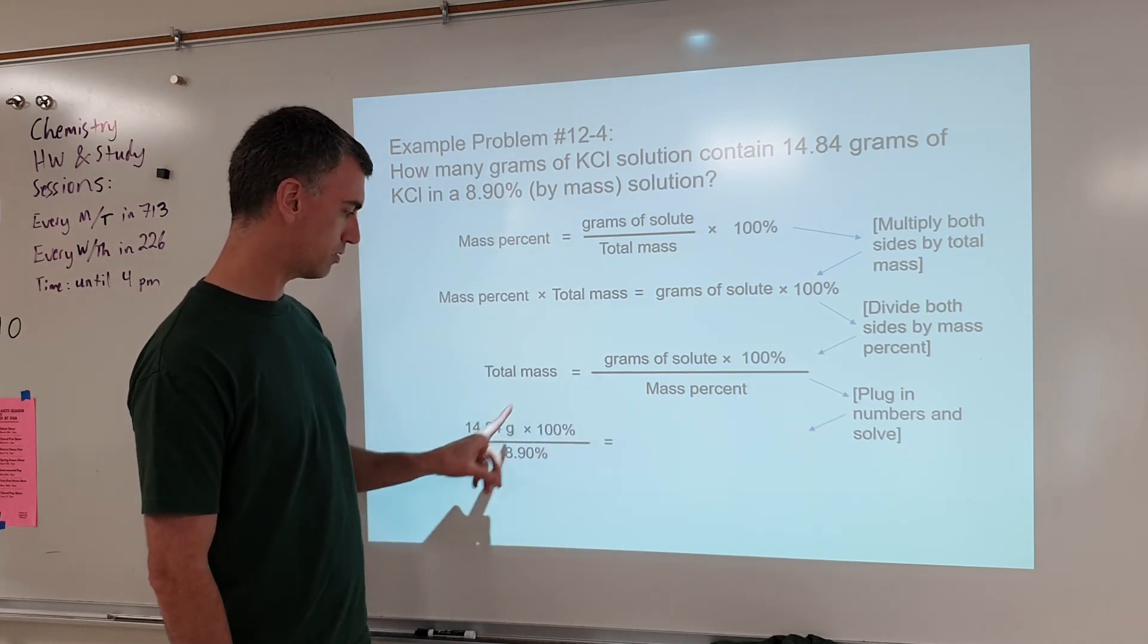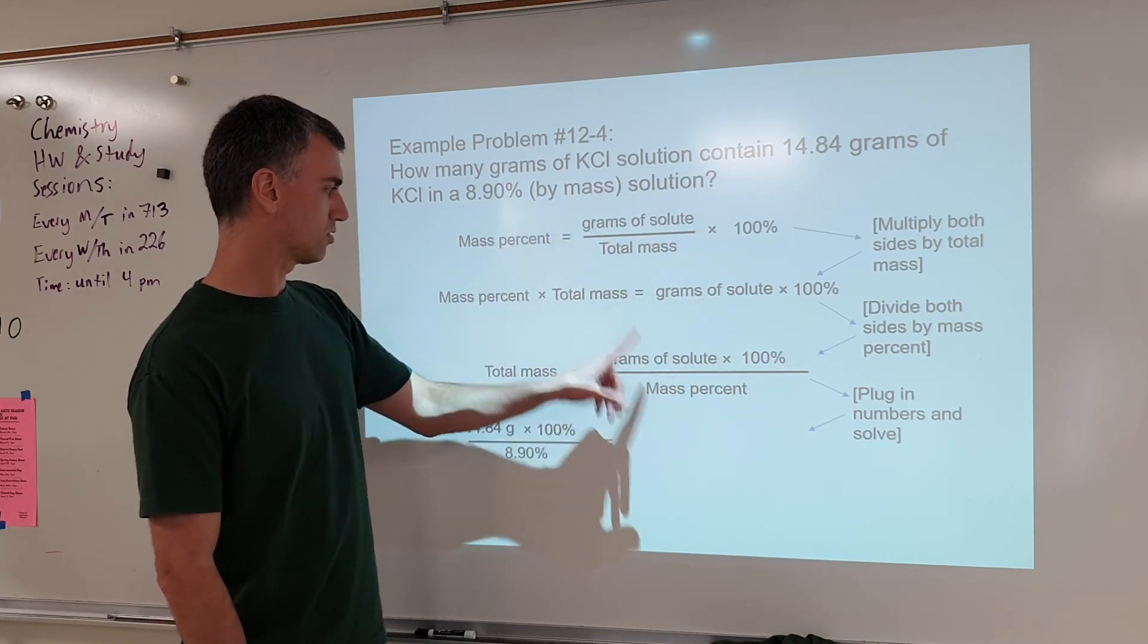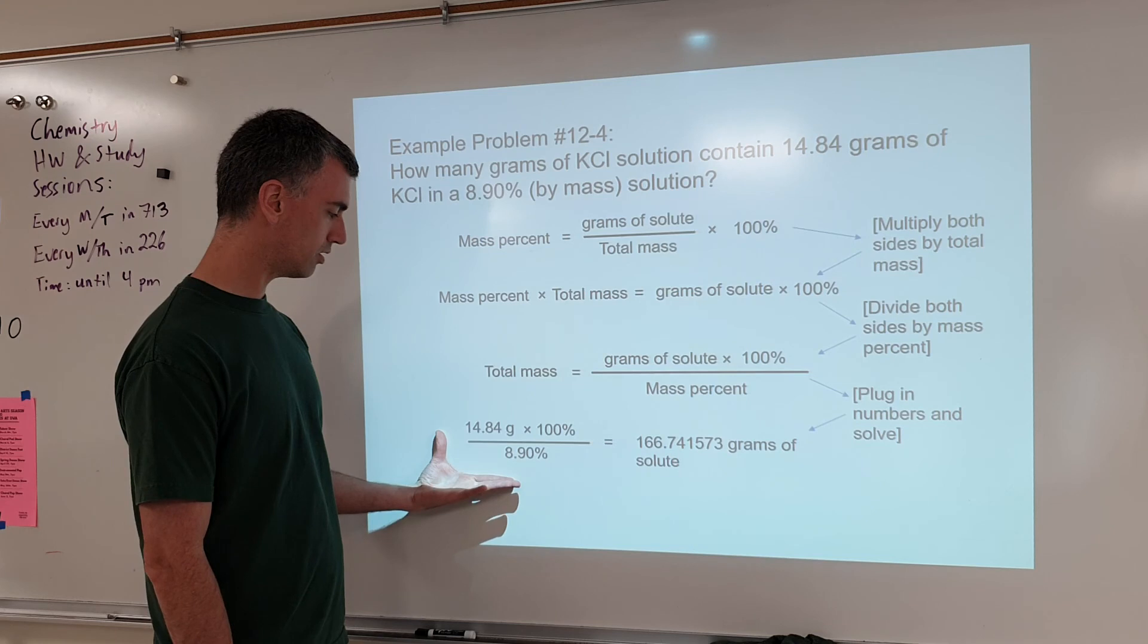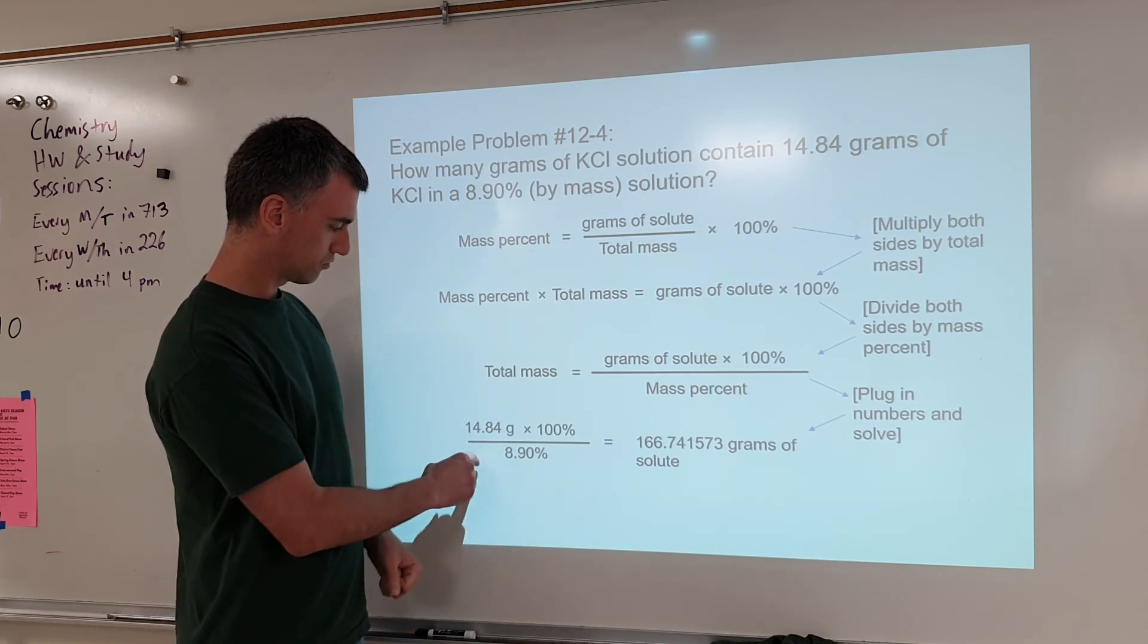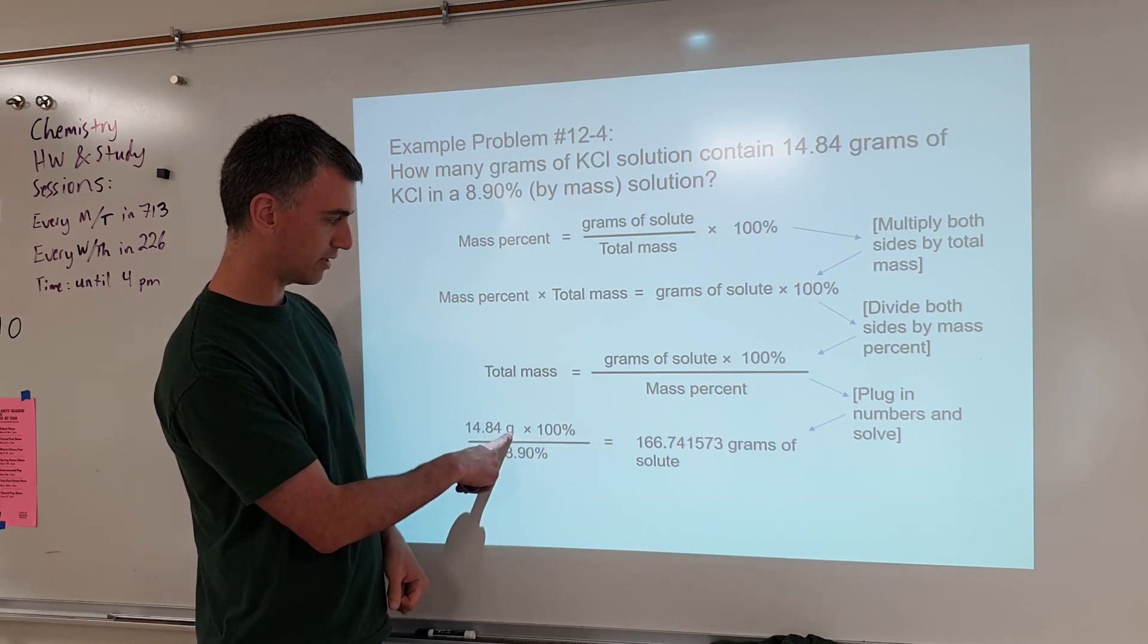This number goes right here. This number goes right here. It looks like this. In your calculator, you get this number. So how do we round that? What cancels what? Percent cancels percent to give grams for your answer.